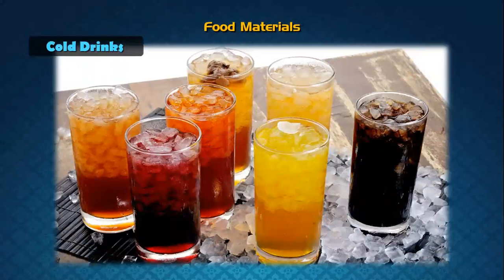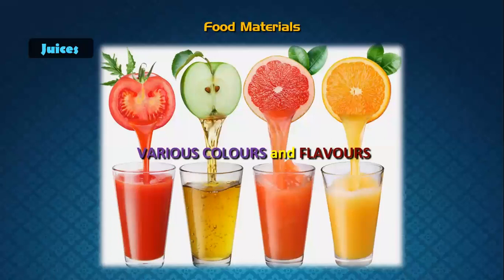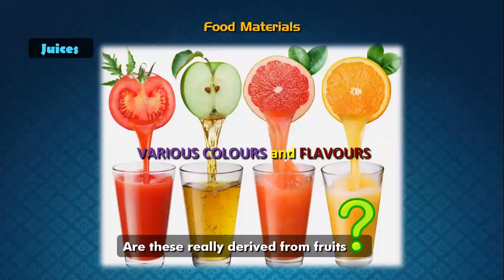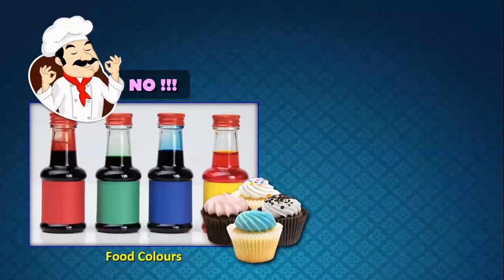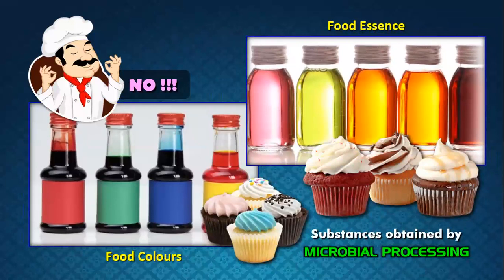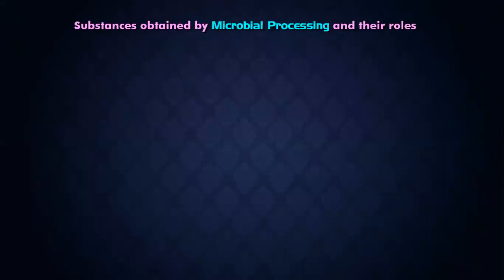Now we come to a very important second table. Food materials like cold drinks and ice cream — do you think they have actual colors and actual flavors directly from fruits? Not all of them. There are specific food colors and essences obtained by microbial processing. During the lockdown phase, when many people were baking, you must have come across food essences; the most common is vanilla essence. All of this is produced with the help of microbes.